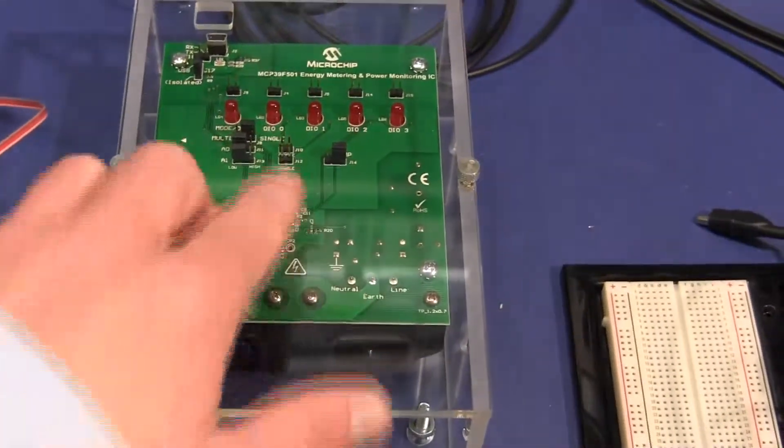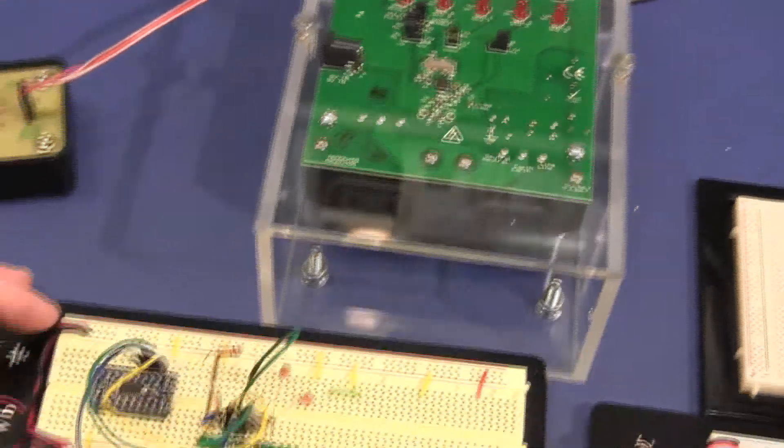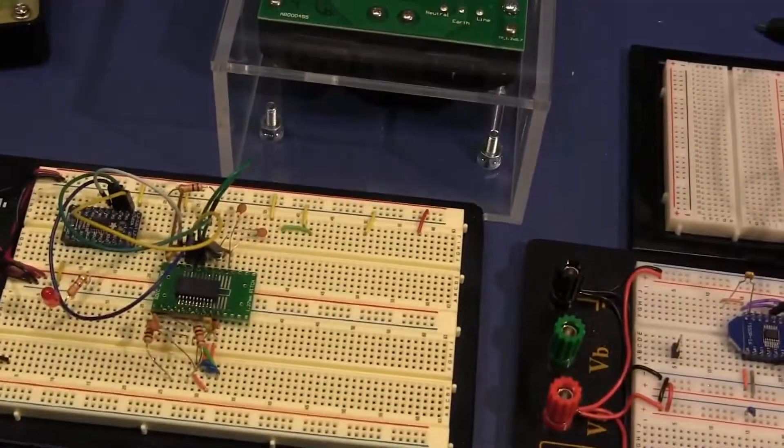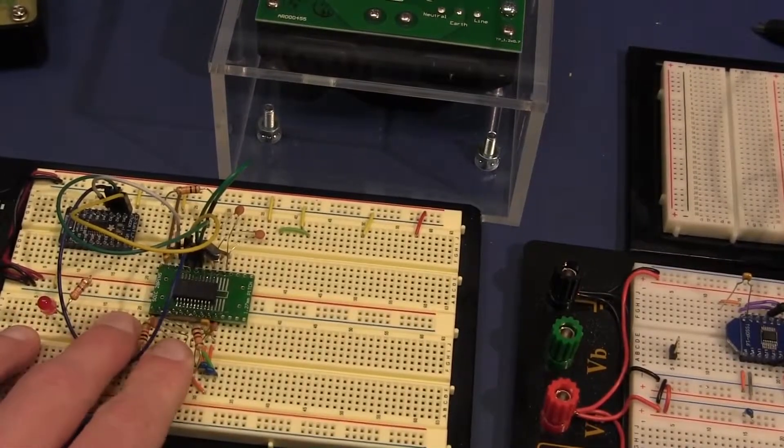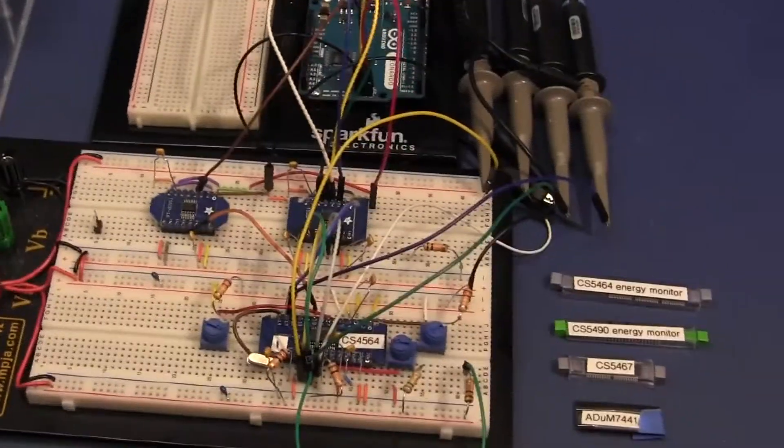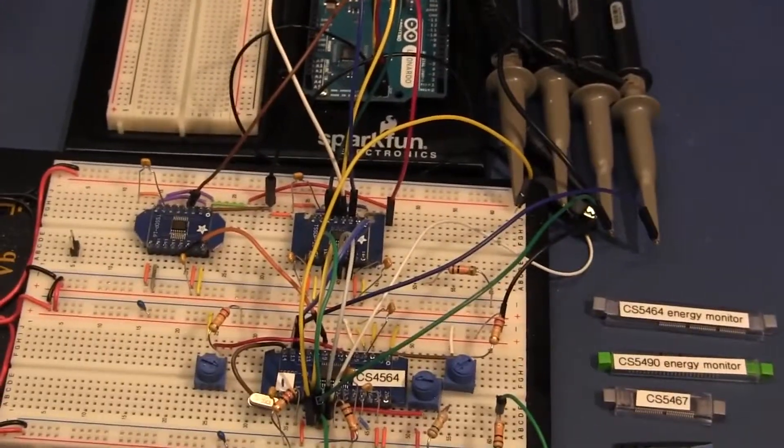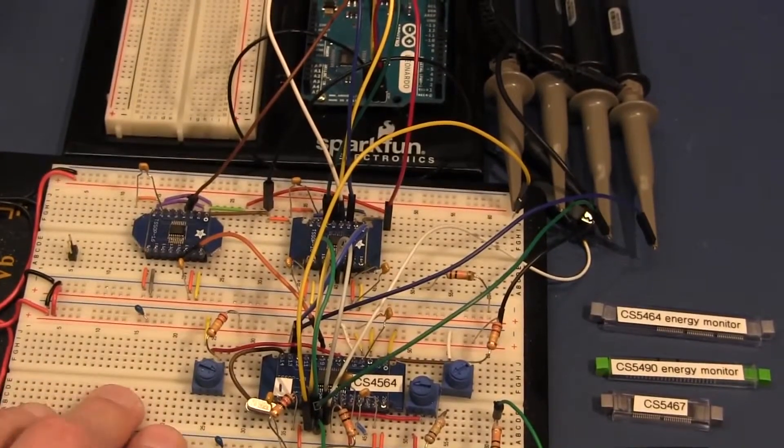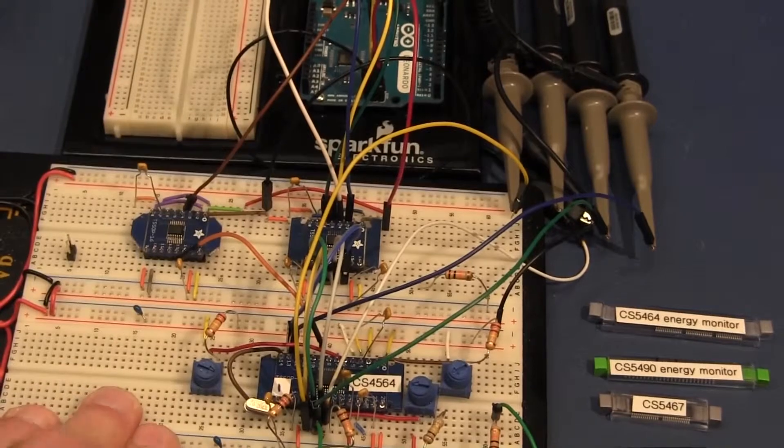But we'll go into something more complicated like the MCP39F501 as well as some of the analog devices like the ADE7913 here. And we'll also look at a couple of devices from Cirrus. We will look at specifically the CS5464 and probably the 5490 chips as well.